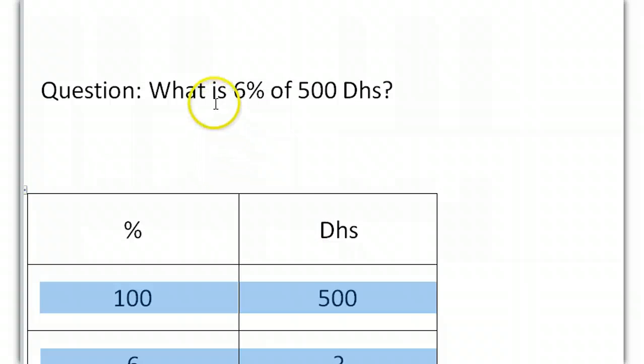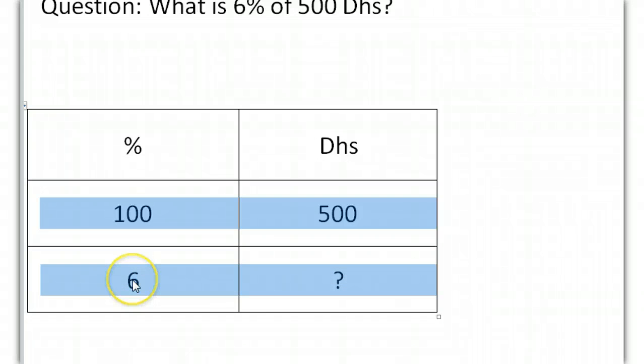We've said what is 6% of 500 dirhams? We know the total amount is 500 dirhams and the total amount is 100%. We want to know 6%. This is the quantity that we're looking for.